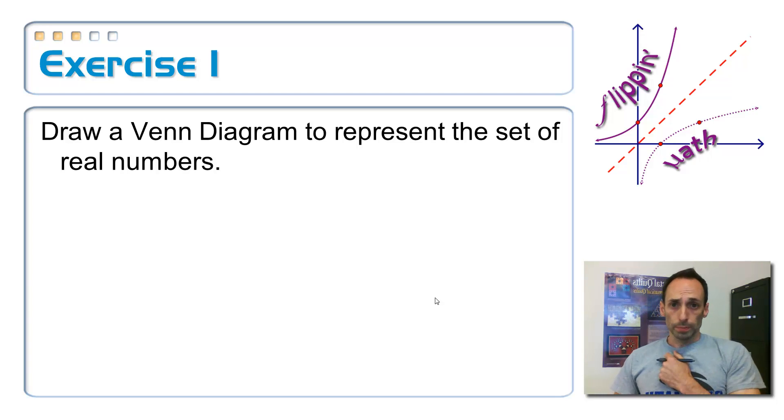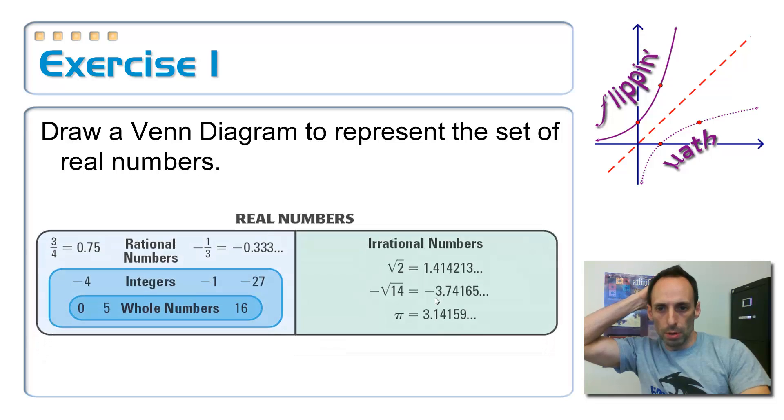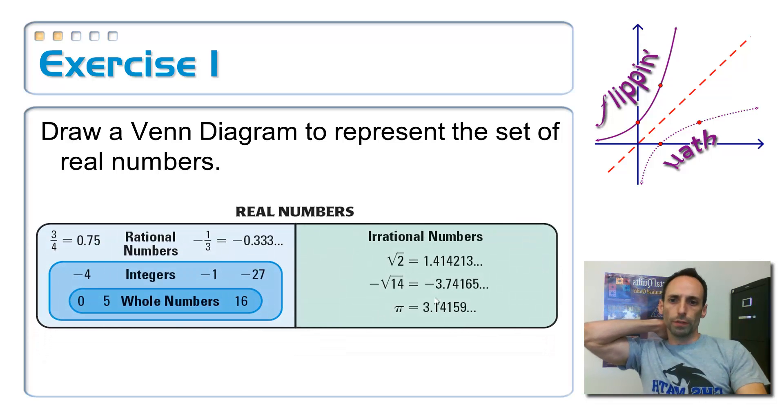So here I'm going to ask you to draw me a Venn diagram, like the one that was at the beginning of this lesson, circles and stuff like that, that represents the set of real numbers. So pause the video right now, think about it for a second, just jot down what you think a Venn diagram would look like for the set of real numbers. Include rationals and irrationals and integers and whole numbers and natural numbers. So let's see if what you came up with. Did you come up with something like this? This is a picture taken straight from your book.